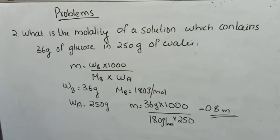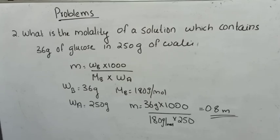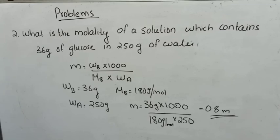Second problem: What is the molality of a solution which contains 36 grams of glucose in 250 grams of water? Molality = number of moles of solute / mass of solvent in kilograms = WB × 1000 / (MB × WA). Here WB = 36 g, molar mass of glucose MB = 180 g/mol, and mass of solvent WA = 250 g. So m = (36 × 1000) / (180 × 250) = 0.8 mol/kg.